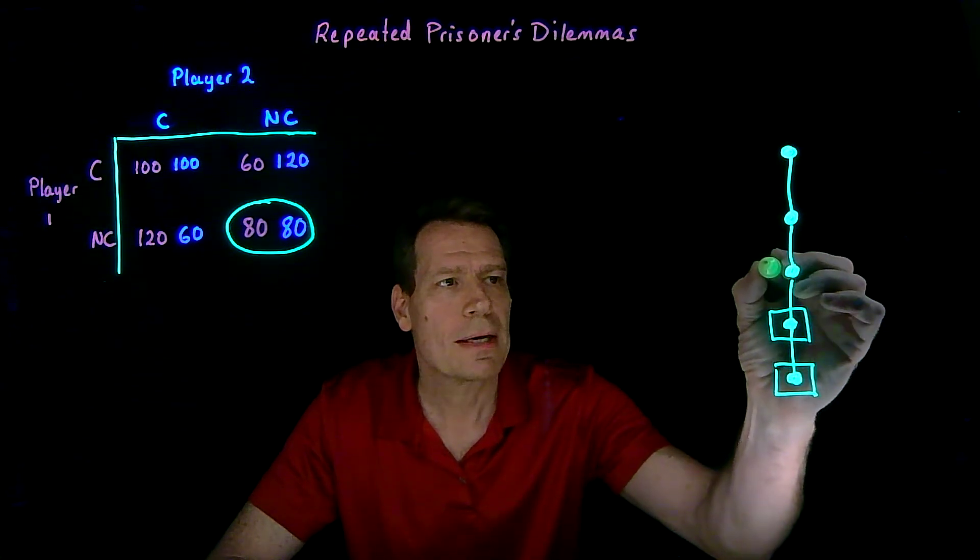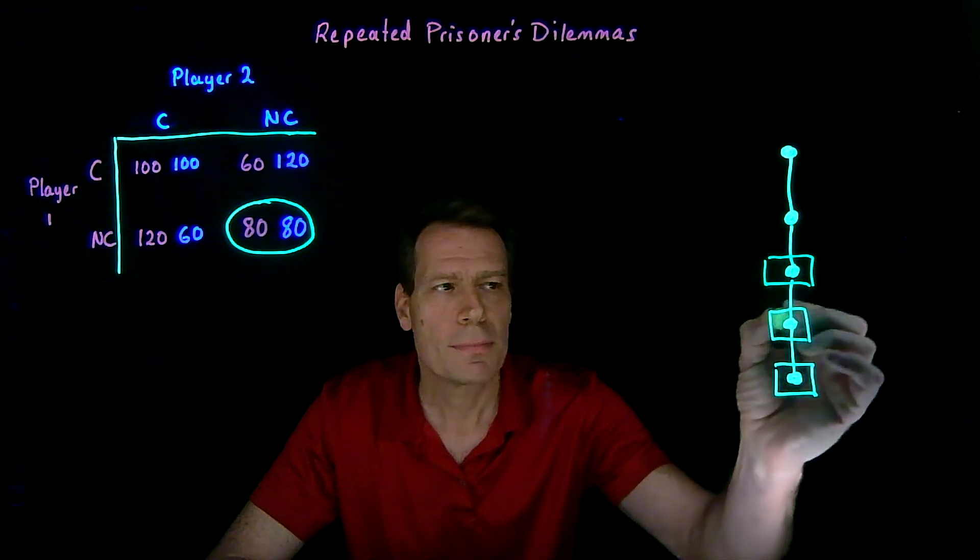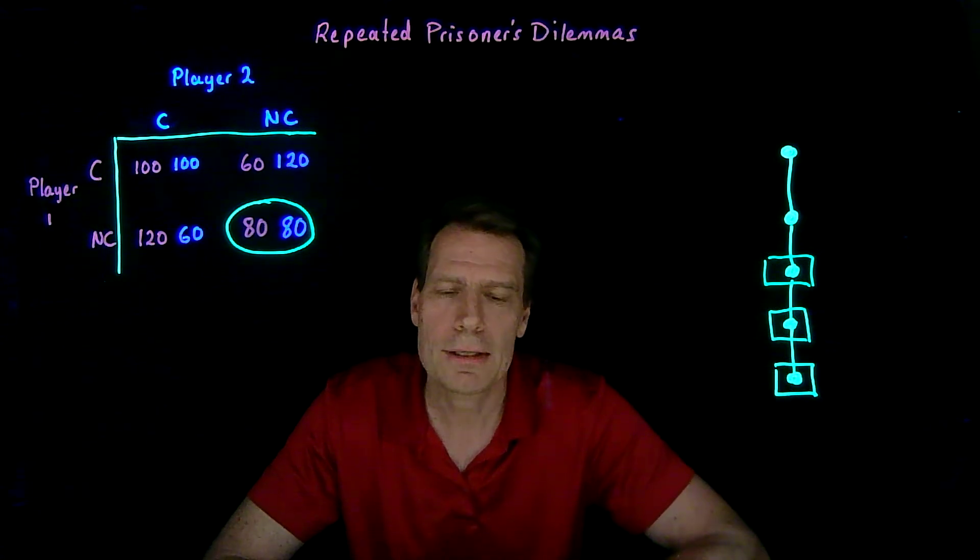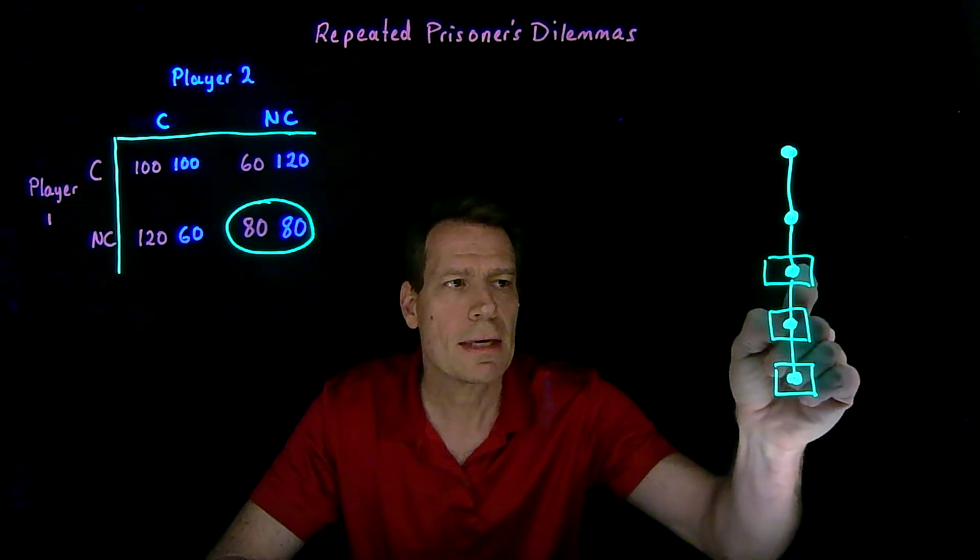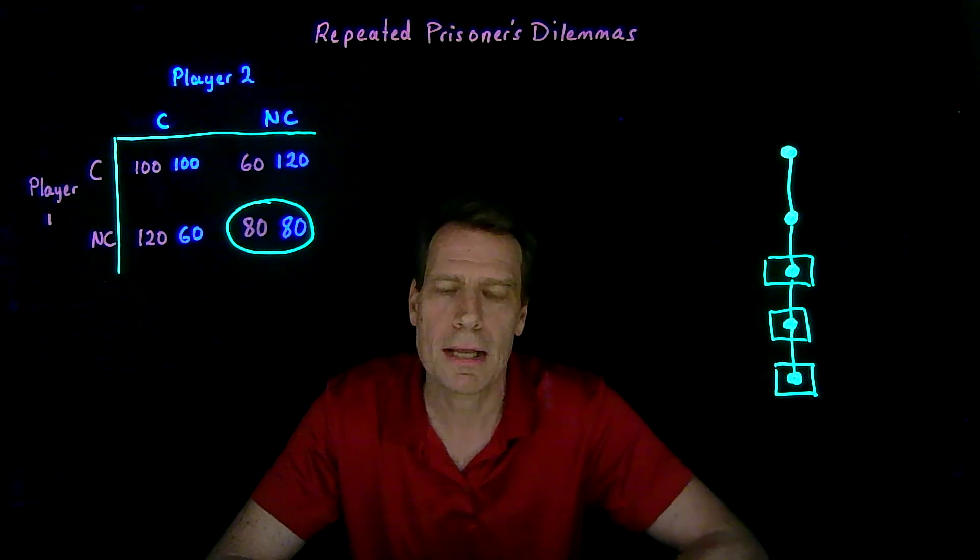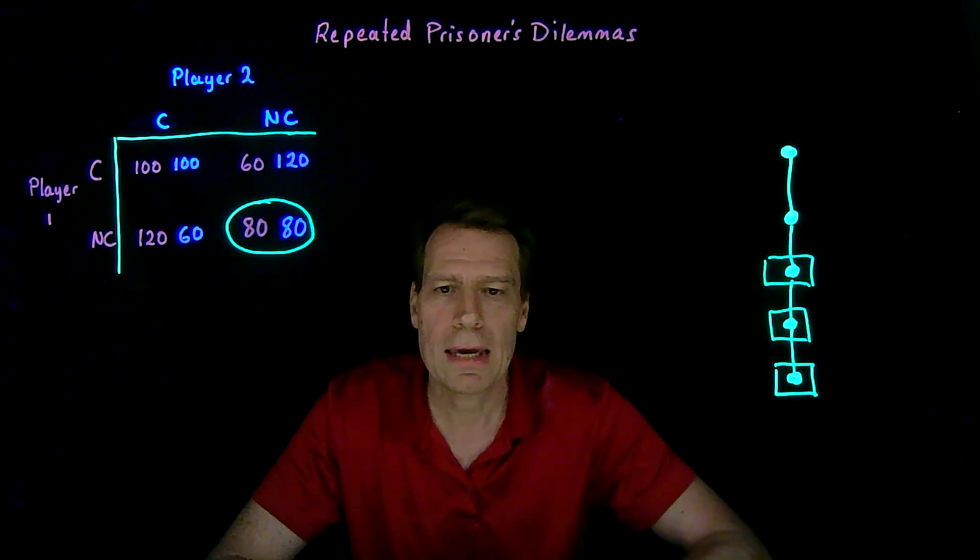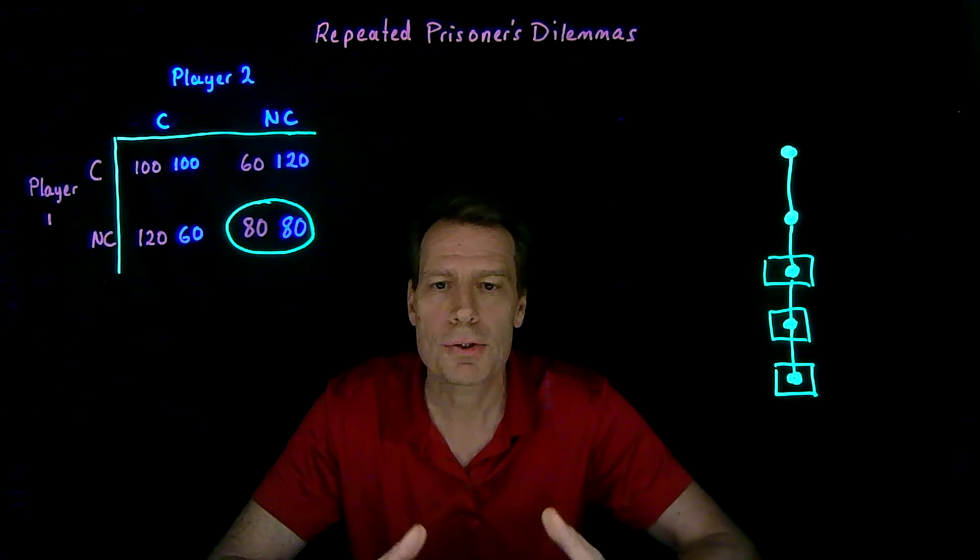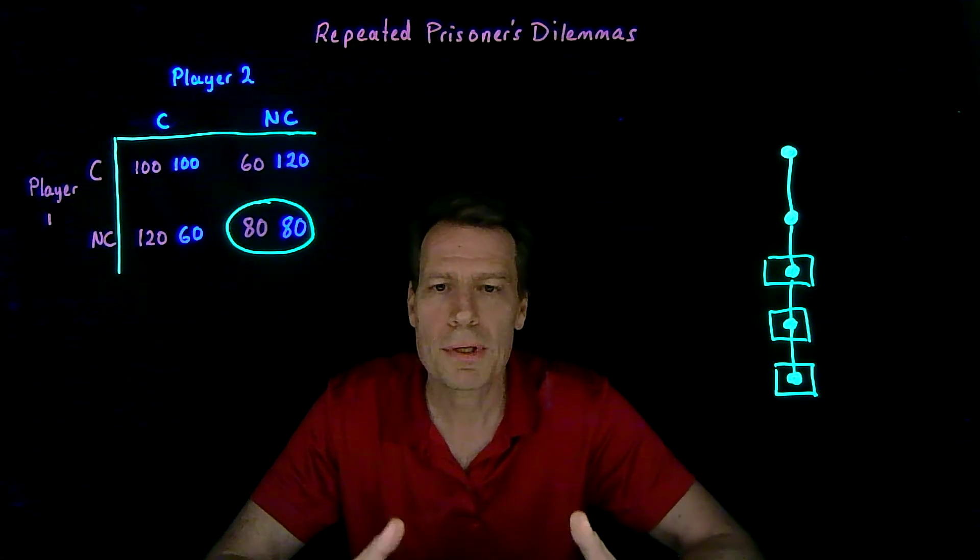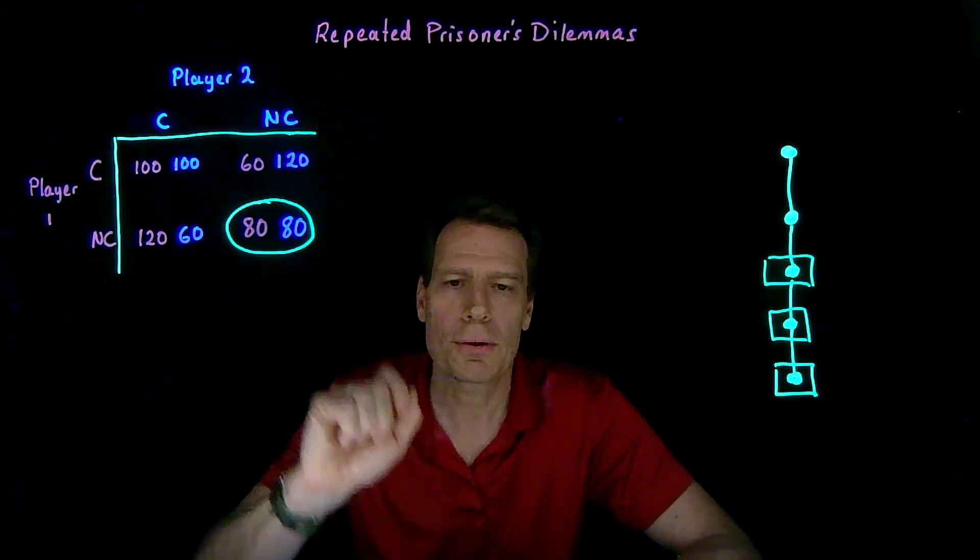They know this when they're playing this game. They know they're not going to cooperate in the last two games. There's nothing they can do to induce cooperation in the last two games, so they once again play the game as if it was a single-shot game. And we know the outcome of that game, which is to not cooperate.